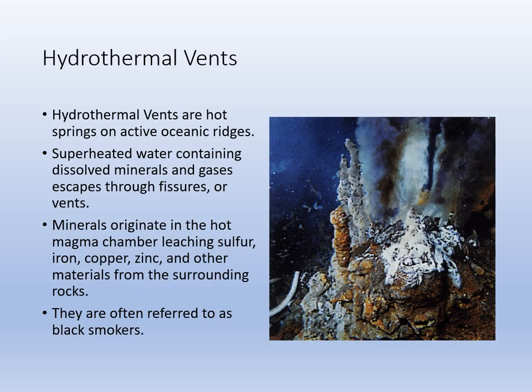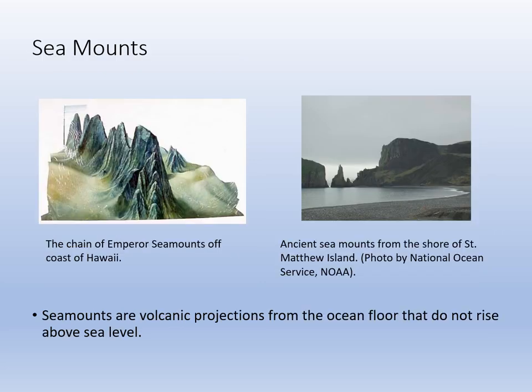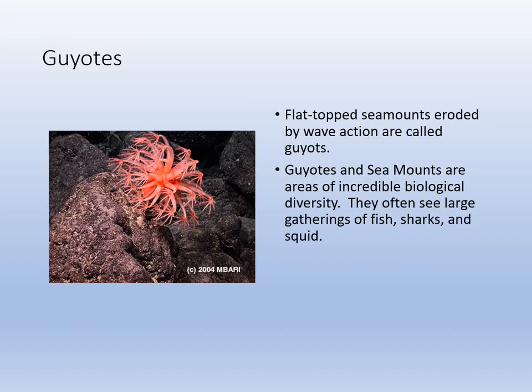A hydrothermal vent is also called a black smoker because it spews out hydrogen sulfide, which is a black chemical used in chemosynthesis — the hydrogen sulfide is used for energy production. Entire deep sea ecosystems thrive around these vents. Seamounts are extinct underwater volcanoes, and as they erode they become guyots because guyots have flat tops. They're ecologically important because they can reach up to the photic zone, creating life in areas that would otherwise be too dark and deep. These seamounts and guyots are ecological hotspots in deep ocean areas.